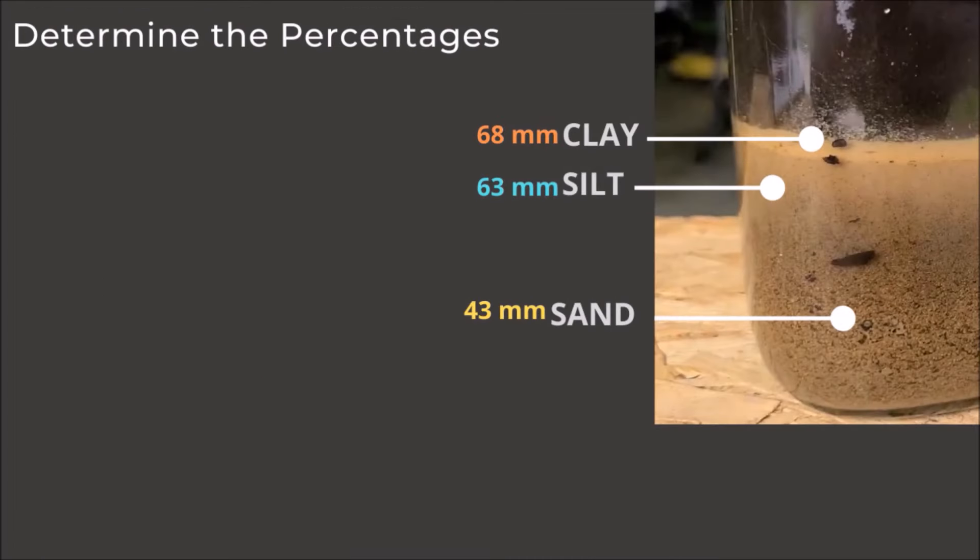To calculate the percentage of sand, take the height of the sand, 43, divided by 68, which is the total height, and we get 63.2 percent. To do this for the silt, we take the height of the silt minus the height of the sand, so 63 minus 43 is 20, divided by 68, giving 29.4 percent.